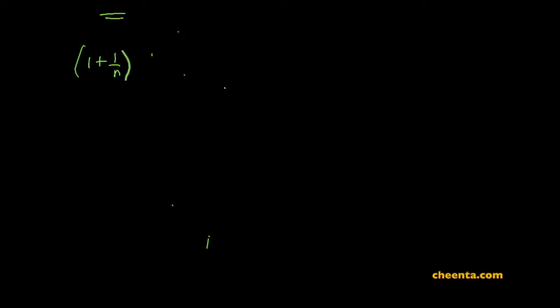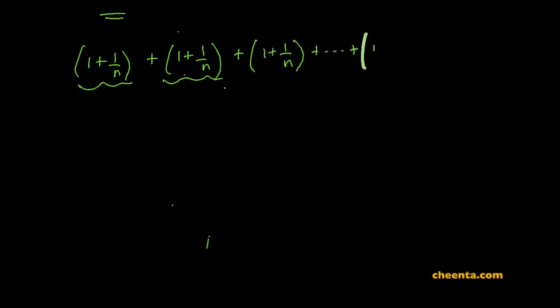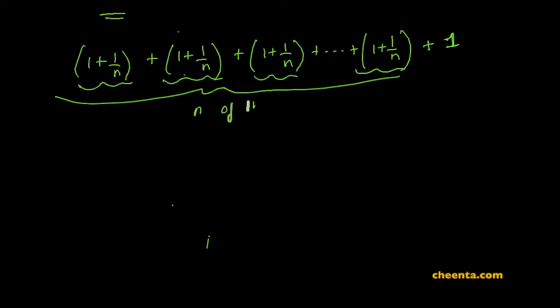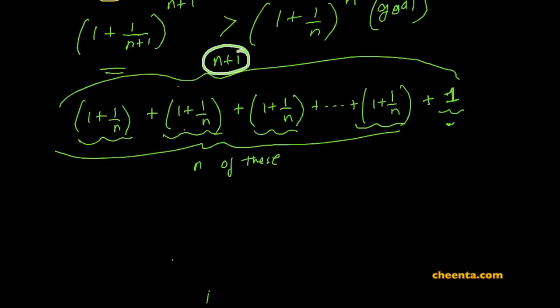Let's try to show this is true. What we will do is take n copies of (1 + 1/n) — think of each as one term, so there are n copies of these — and then there is a 1. In total, there are n of these (1 + 1/n)'s and one additional 1. We will apply the AM-GM inequality on these n+1 objects.